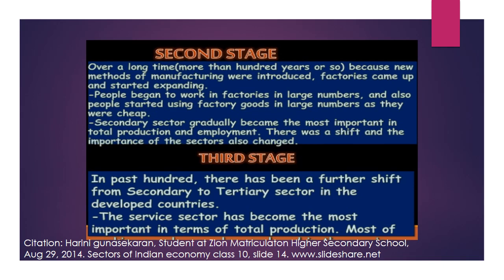Over hundreds of years, new methods of manufacturing were introduced, factories came up, and people started working in factories with less dependence on agriculture — this is how countries moved to the secondary stage. In the third stage, there was a further shift from secondary to the tertiary sector in developed countries. We are still in the developing stage, so we depend on agriculture and industry, but in developed countries more people are engaged in the service sector.